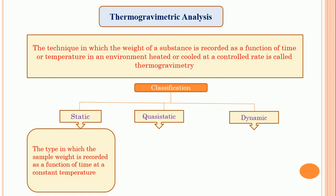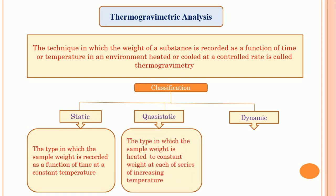Simply, static thermogravimetry means the loss in weight is recorded as a function of time at a constant temperature. Now see quasi-static thermogravimetry — the type in which the sample is heated to a constant weight at a series of increasing temperatures. In quasi-static thermogravimetry, the temperature is increased to a constant weight, and that is different from static thermogravimetry where the temperature remains constant.